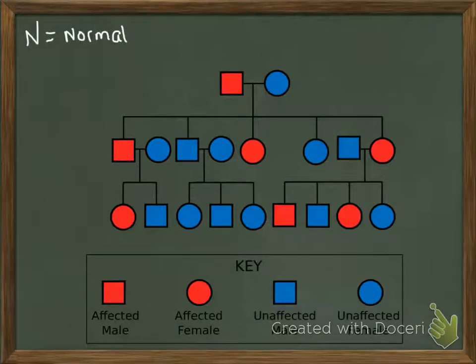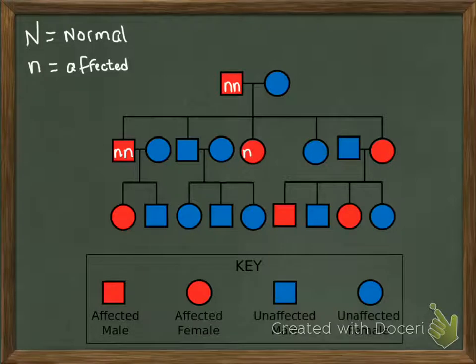Here's our pedigree, and we're going to use capital N to represent normal, because that would be the dominant trait. And then we are going to use lowercase n to represent affected. If our affected individuals are all recessive, then all of the individuals that are red are going to be little n, little n. We're just going to look at the F1 generation initially.